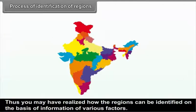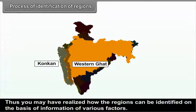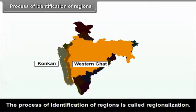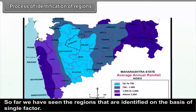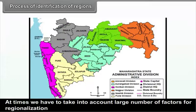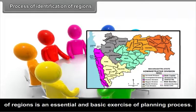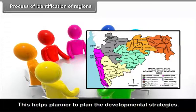You may have realized how regions can be identified on the basis of information on various factors. The process of identification of regions is called regionalization. We have seen regions identified on the basis of a single factor. However, identification of regions is quite a complex process — at times we have to take into account a large number of factors. The identification of regions is an essential and basic exercise of the planning process, and it helps the planner to plan developmental strategies.